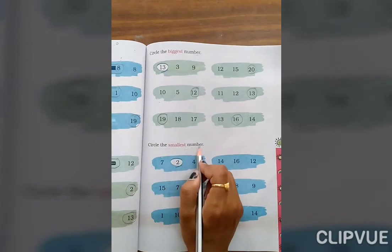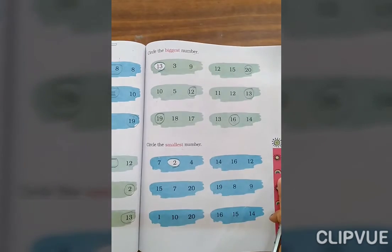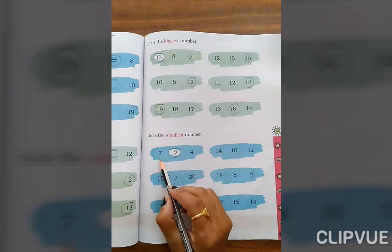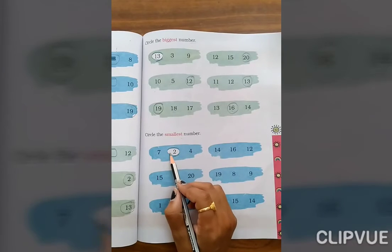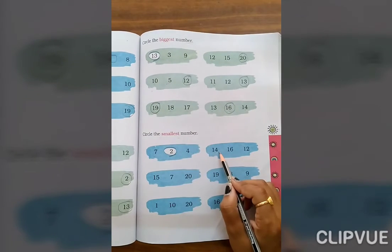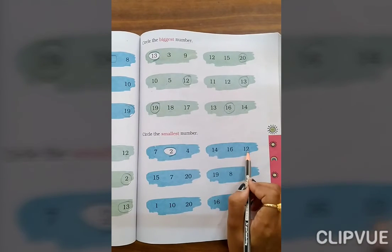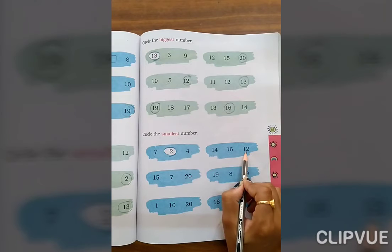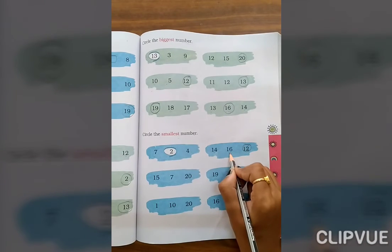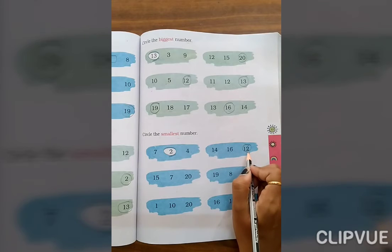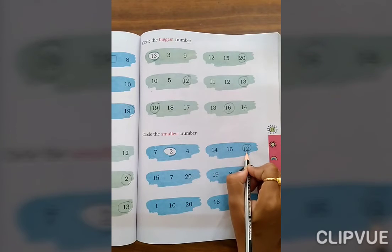Circle the smallest number. Here one example: 7, 2 and 4. Then smallest is 2. So 14, 16, 12. Which one is smallest number? 12. 14 or 16 say 12. Then 12 is the smallest number.